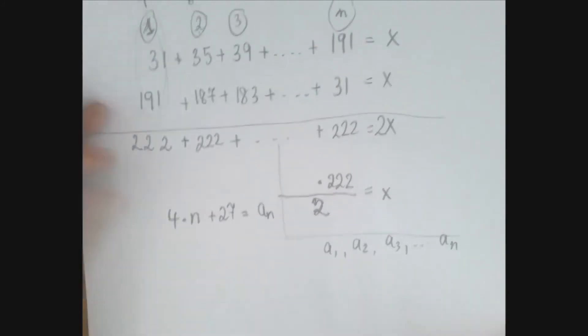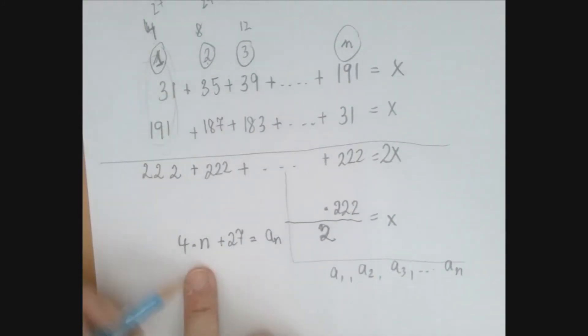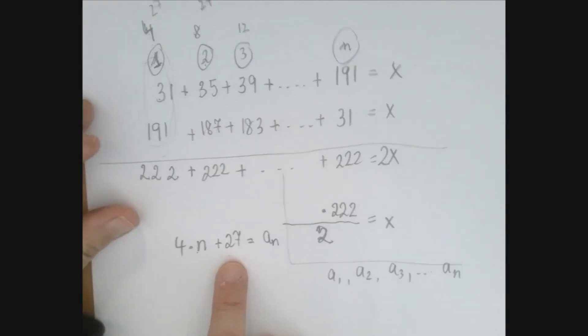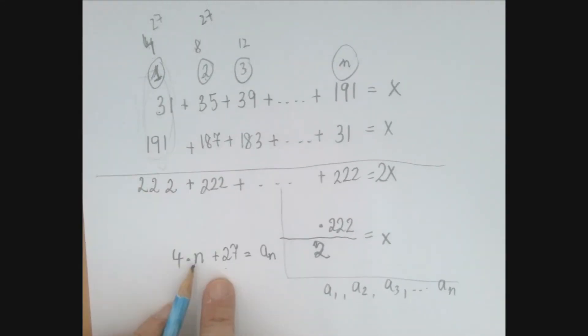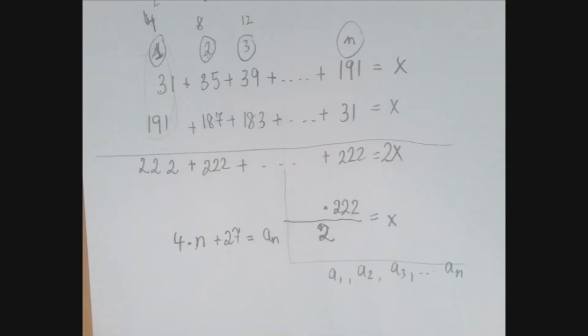Let's check. If n is one, we put one here, four times one is four plus 27, that is 31. That is the first number. And if you put two into n, we get four times two is eight plus 27 is 35. So we're good there too. If we put n equals three, four times three is 12 plus 27 is 39, which is indeed what the third number should be.